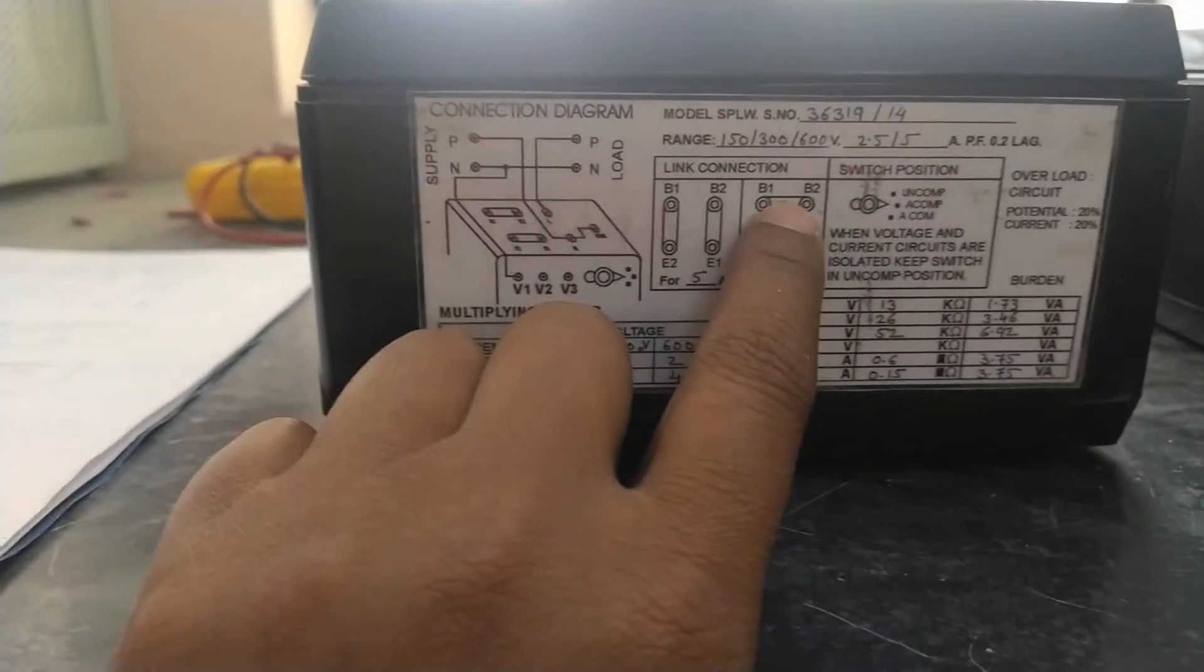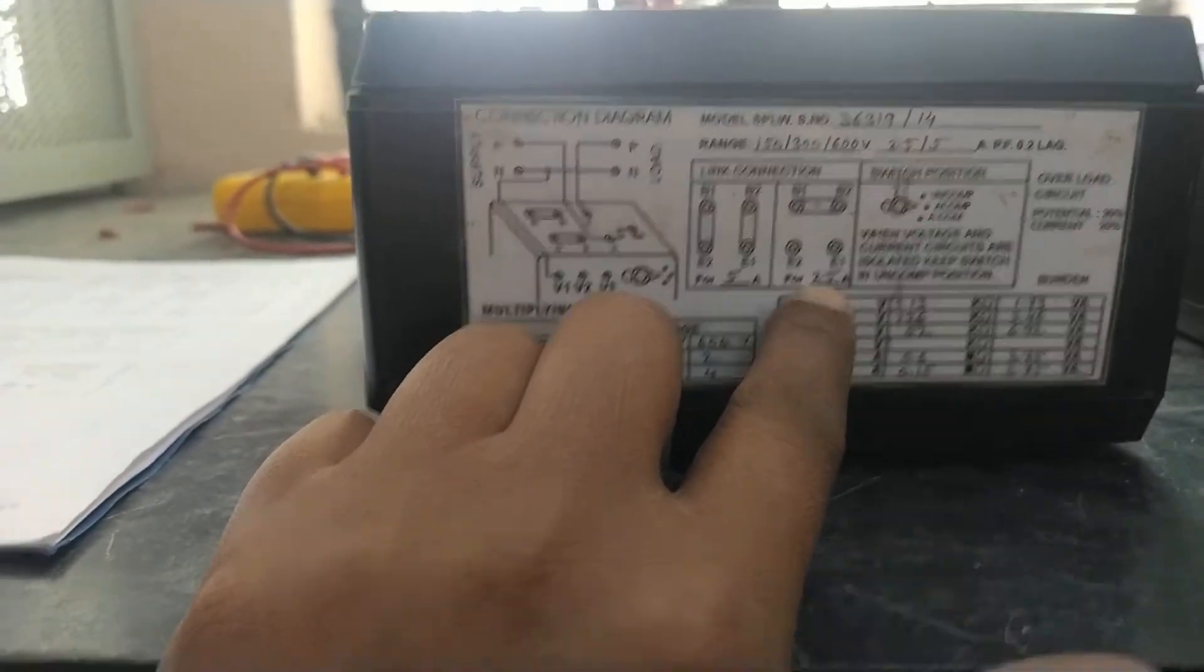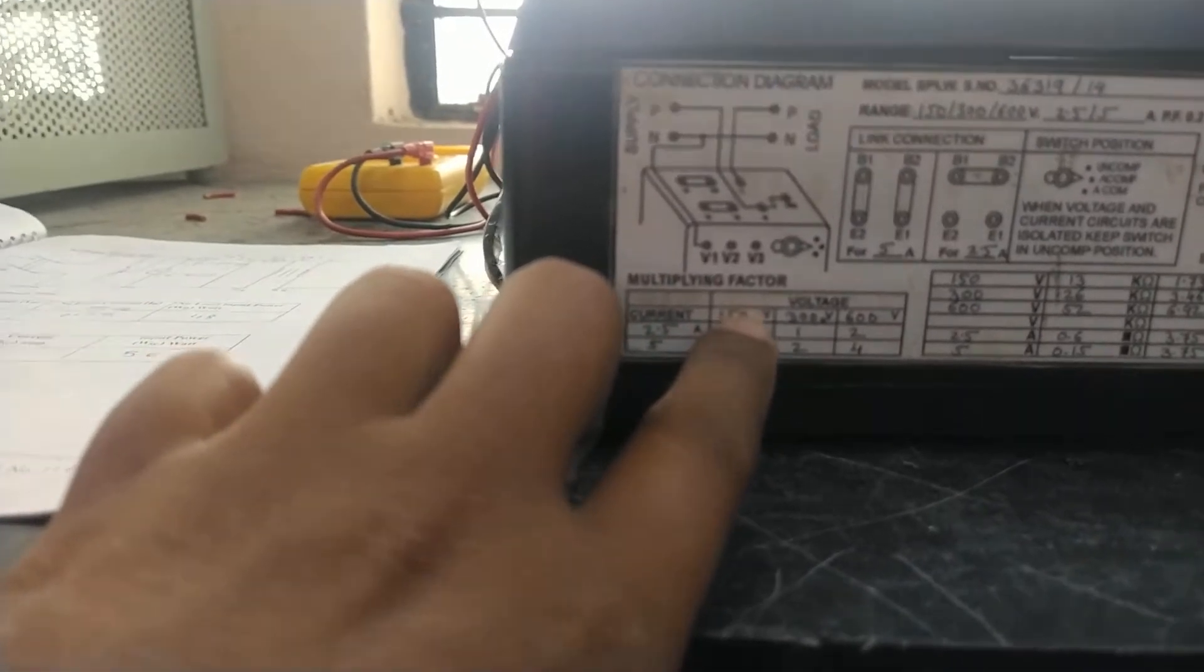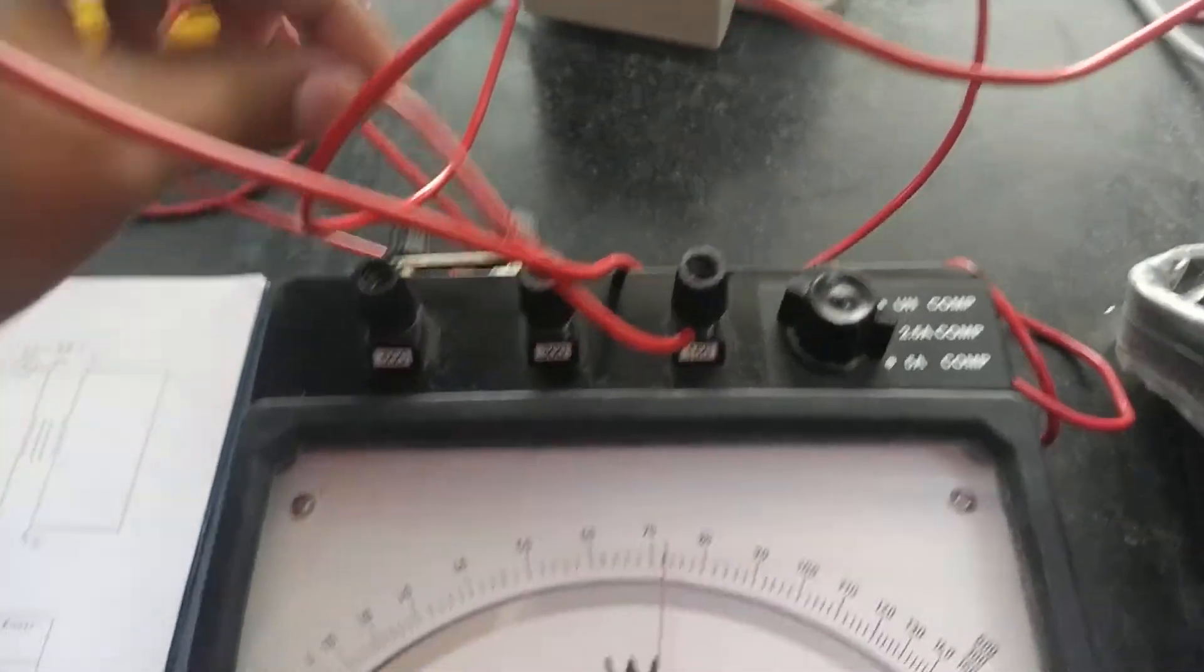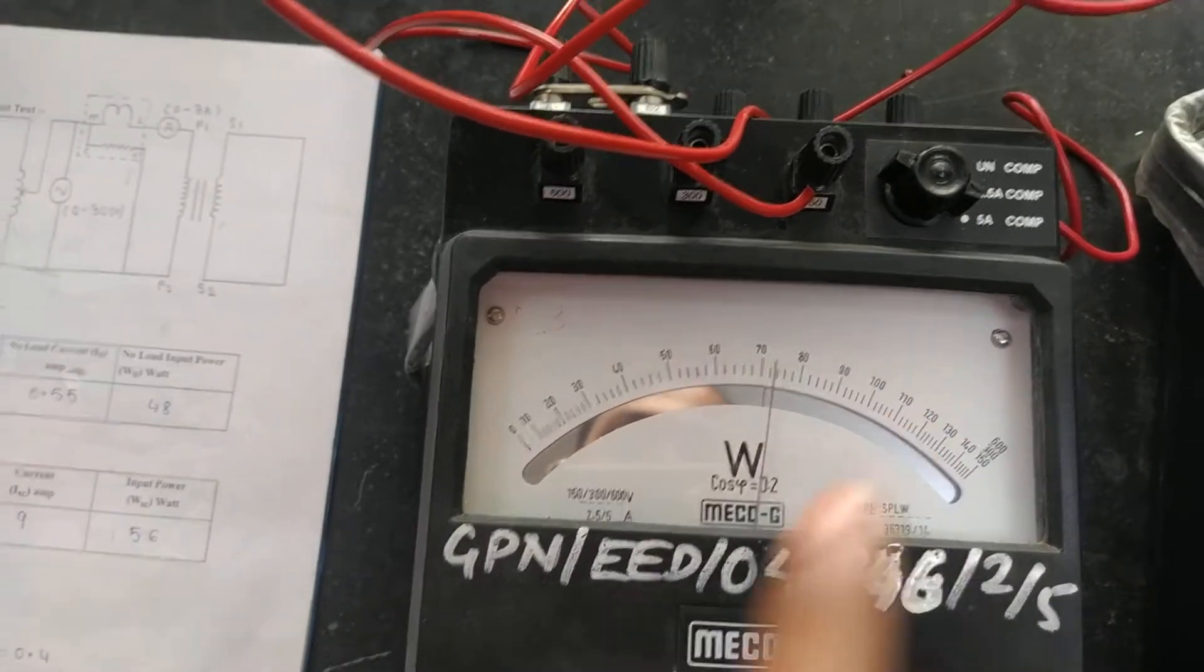So if we short B1 and B2, then current will be 2.5 ampere. So if current is 2.5 ampere, and we have connected it to 150 volt, so multiplying factor will be 0.5 ampere. So here we have connected it to 150 volt, so whatever reading we are getting on wattmeter, we have to half it.